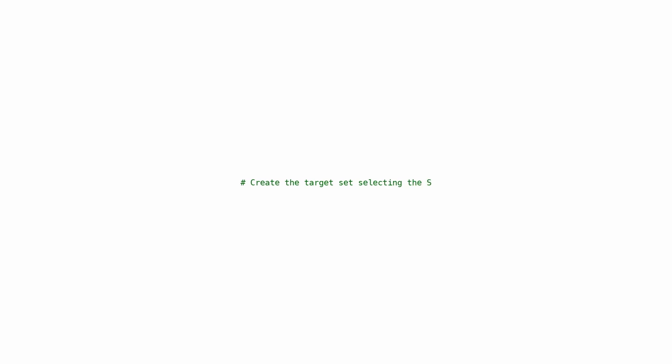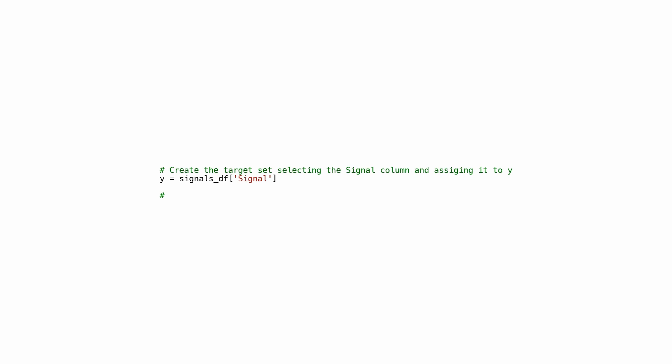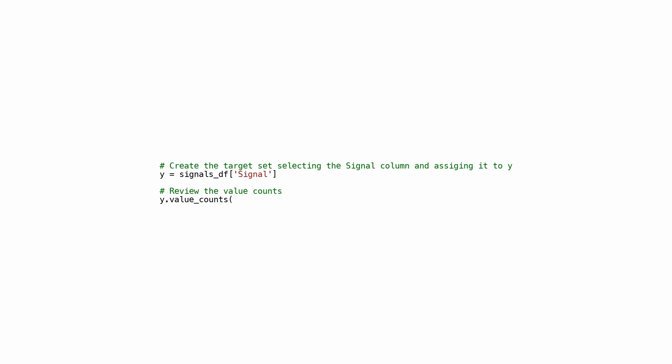This code creates a new variable called Y and assigns it the values in the signal column of the signalsDF DataFrame, making it the target variable for the machine learning model. The next line reviews the value counts of this target set, showing how many instances of each unique value are present, giving insight into the distribution of the target variable.